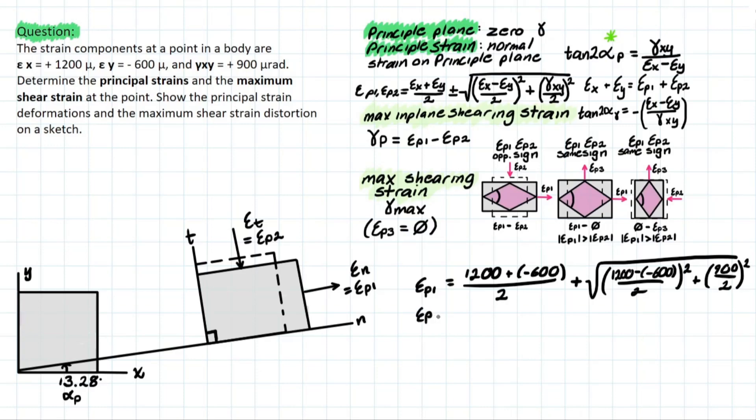And εP1 is going to equal to 1306 micro. This could be in meters per meter, if you want to think about it like that.